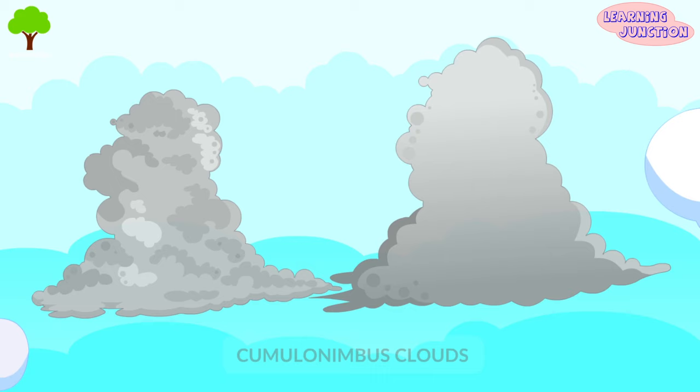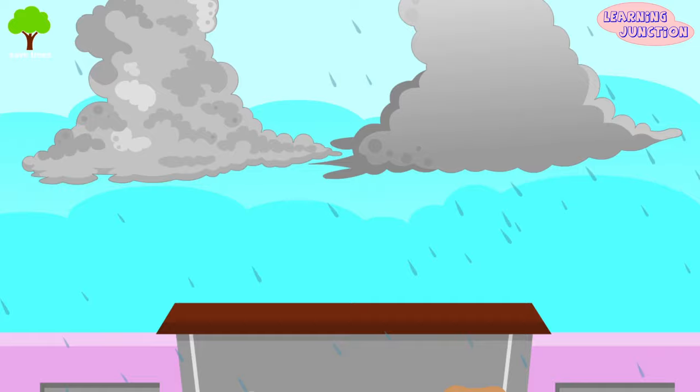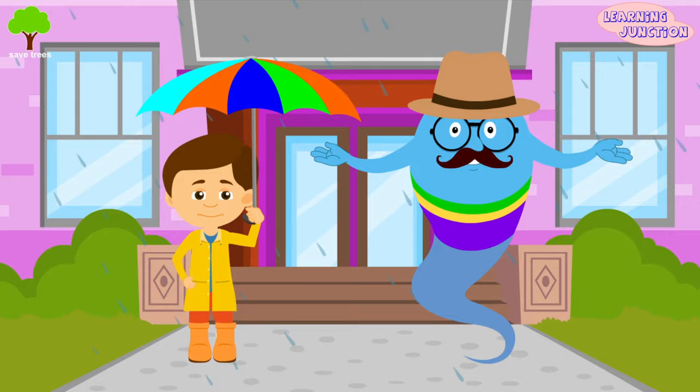Let me show you the clouds which cause thunder and lightning. These are the Cumulonimbus clouds. They are associated with heavy rain, hail, snow, lightning, and even tornadoes.